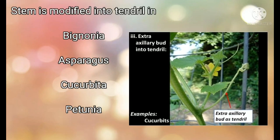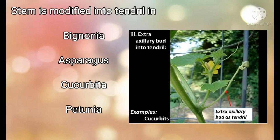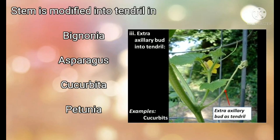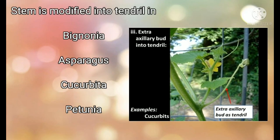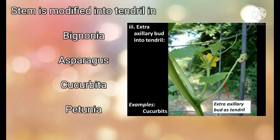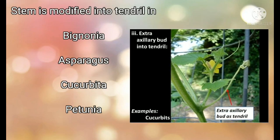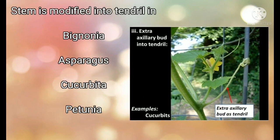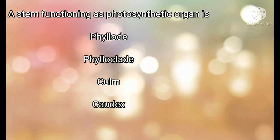This modification can be seen in Cucurbit plants, also called guard plants. For example, watermelon, sweet gourd, rough gourd — these are examples where we can see this type of modification. The extra axillary bud is modified into a wire-like structure for mechanical support.